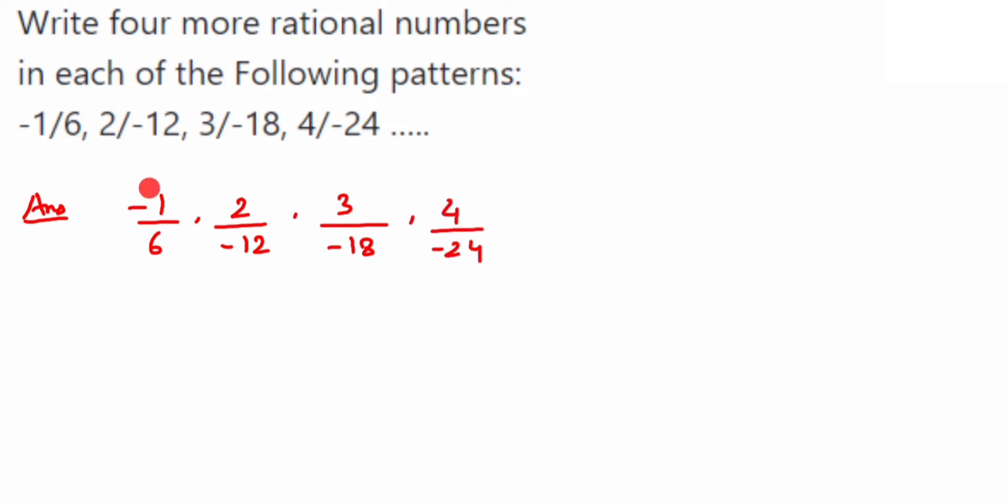So you have to check with the first rational number, that is minus 1 upon 6, how we got the other rational numbers. If you observe here, we are actually getting multiples of 1 in the numerator but we are multiplying with minus 1, minus 2, minus 3 in that way. So we are not multiplying with 1, 2, 3; instead we are multiplying with minus 1, minus 2, minus 3.